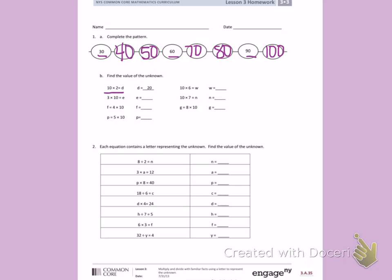3 times 10, I can use this fact here, equals E. E equals 30. F equals 4 times 10. Continuing with my pattern, F equals 40. P equals 5 times 10. P equals 50.